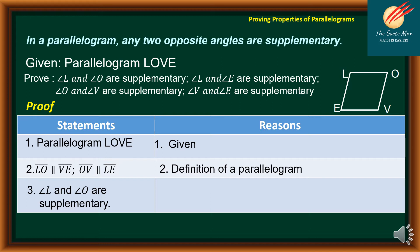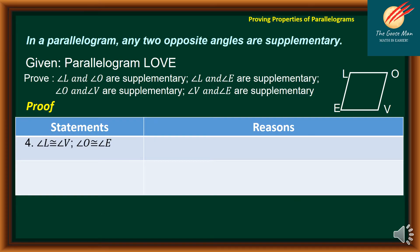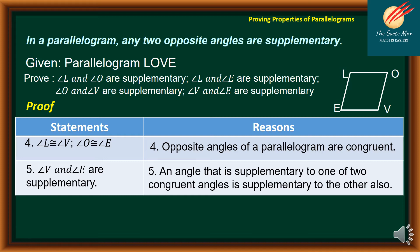For number three, angle L and angle O are supplementary — the reason is if two parallel lines are cut by a transversal, then same-side interior angles are supplementary. For statement number four, angle L is congruent to angle B, and angle O is congruent to angle E — because opposite angles of a parallelogram are congruent. And finally, angle B and angle E are supplementary — because an angle that is supplementary to one of two congruent angles is also supplementary to the other.